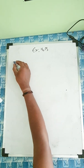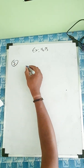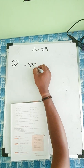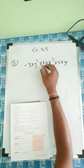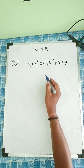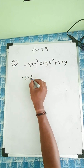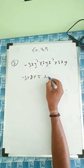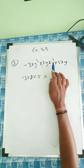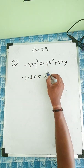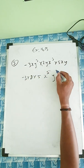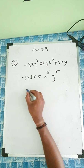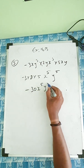Question number 3: simplify the following. First: minus 3xy cubed into 2yx cubed into 5x. Write minus 3, then 2, then 5. For x: 1 plus 3 is 4, plus 1 is 5. For y: 3 plus 1 is 4, plus 1 is 5. Multiplying: 3 times 2 times 5 is 30. Answer: minus 30x to the power 5, y to the power 5.